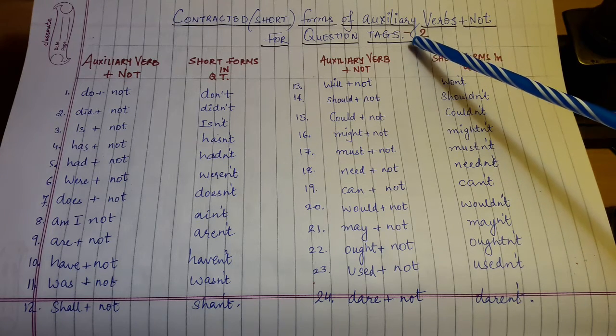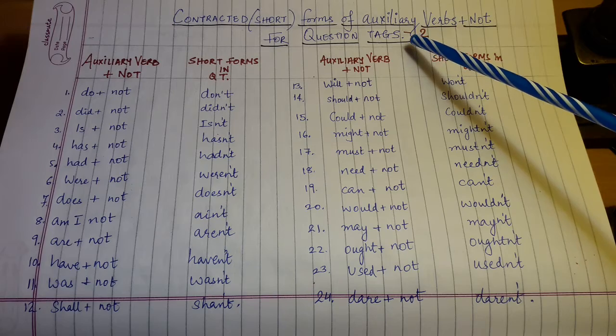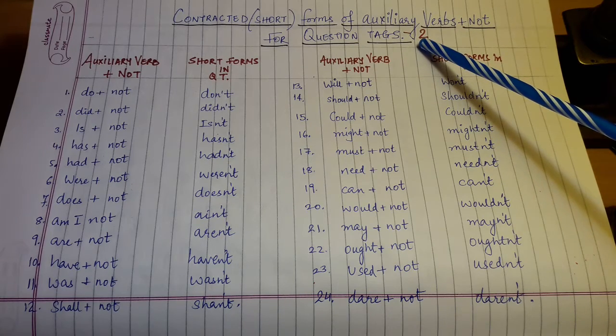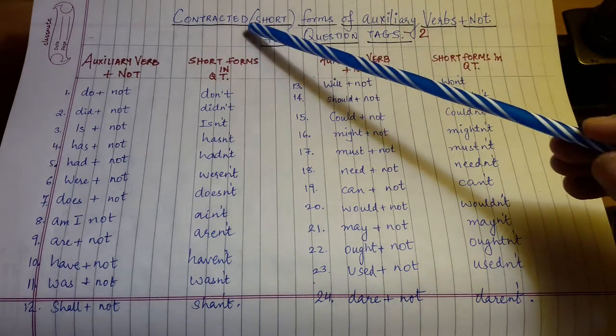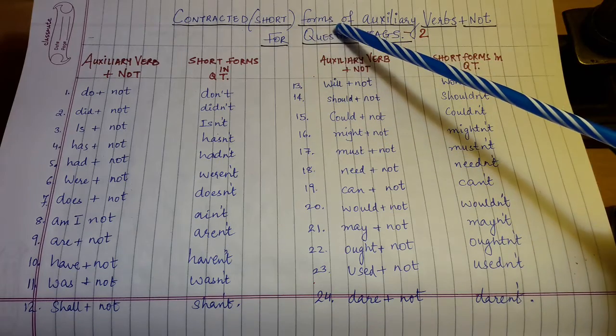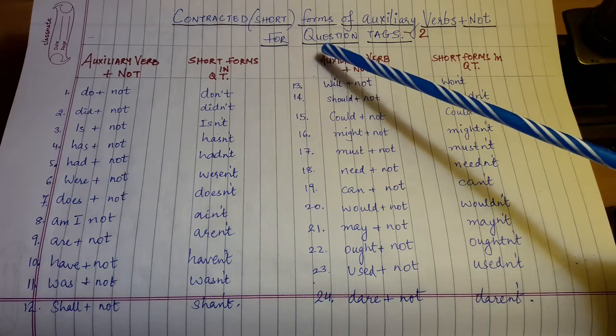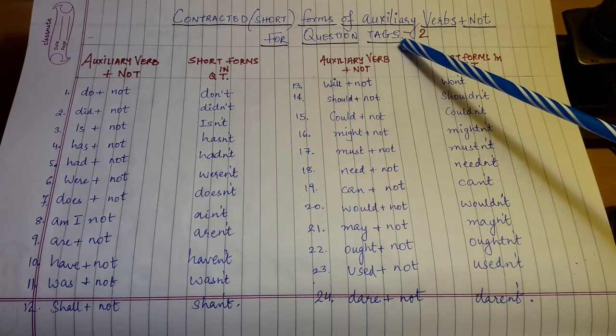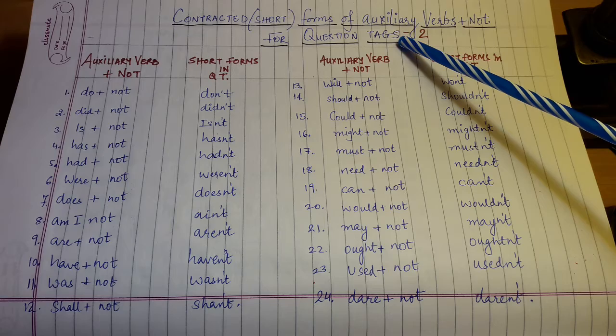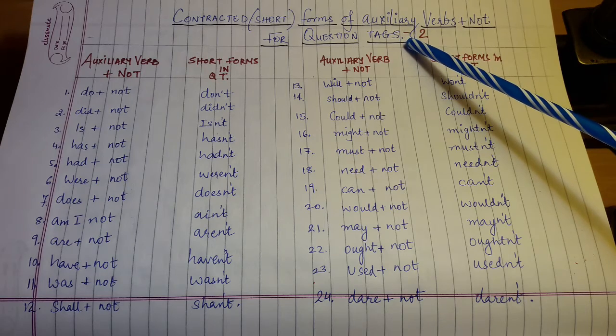Good morning. Welcome to question tag session 2. In this session, there is a list of contracted or short forms of auxiliary verbs plus not for question tags. Let's take a quick look at the list I've made for you all.